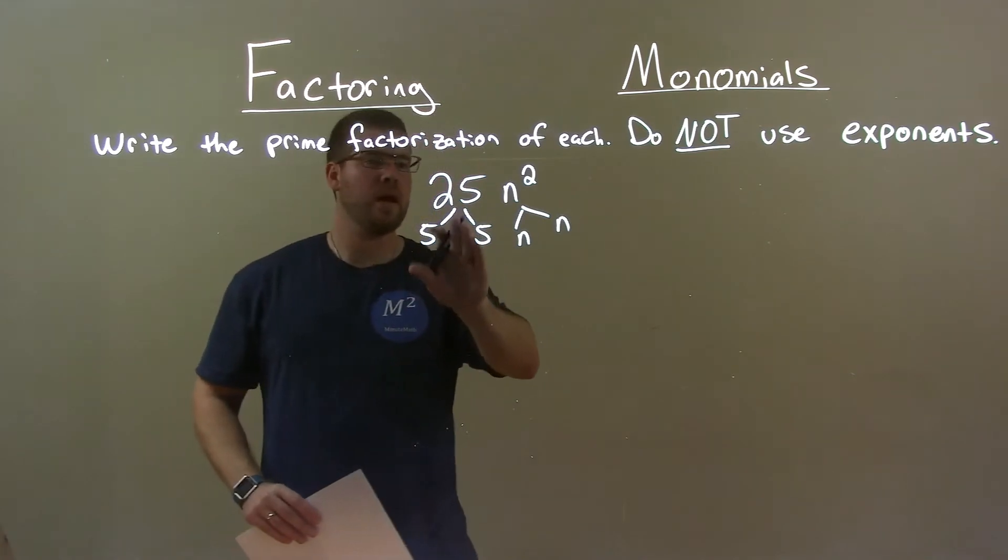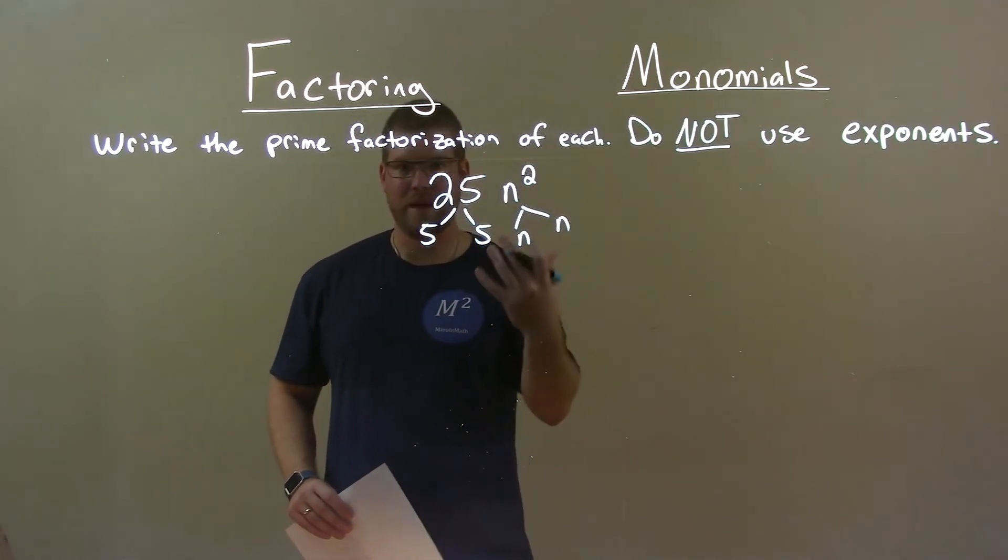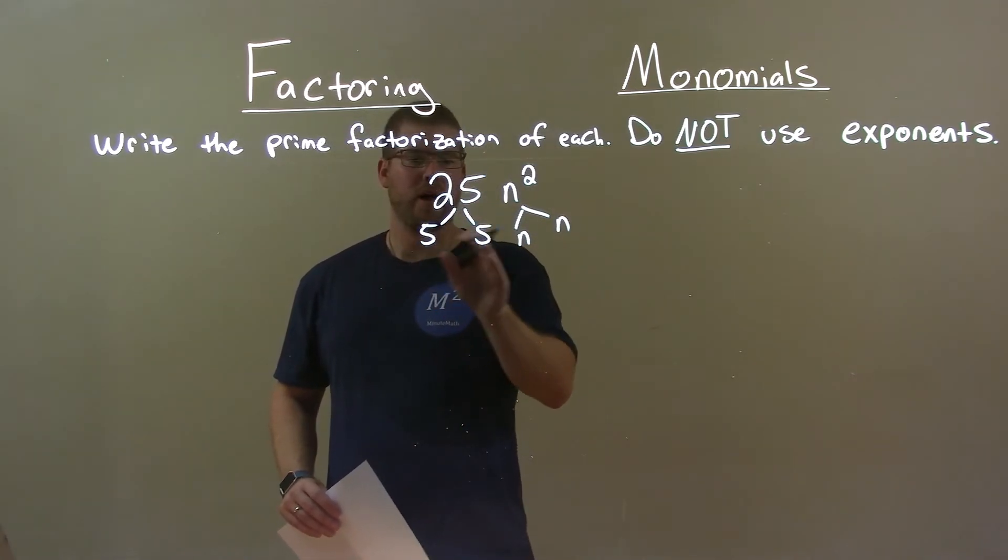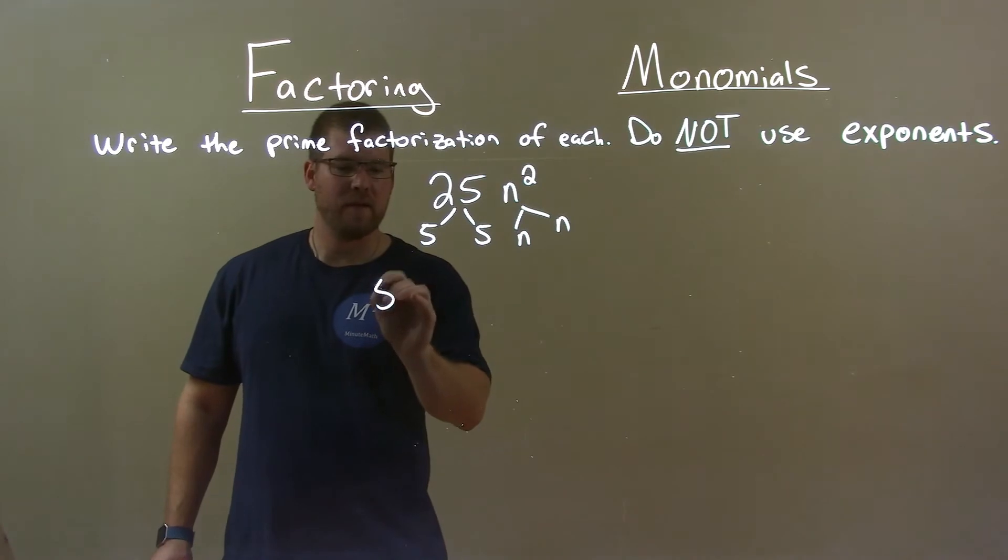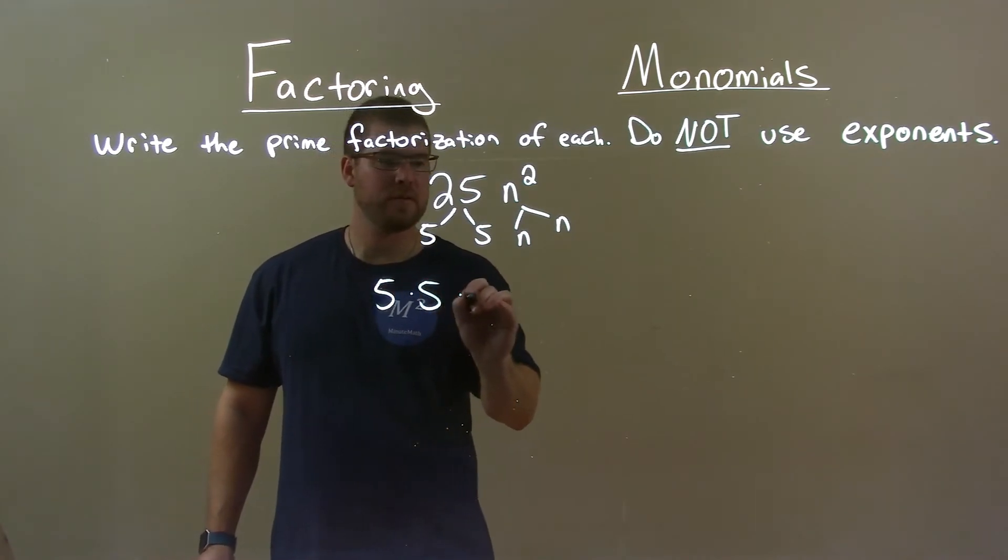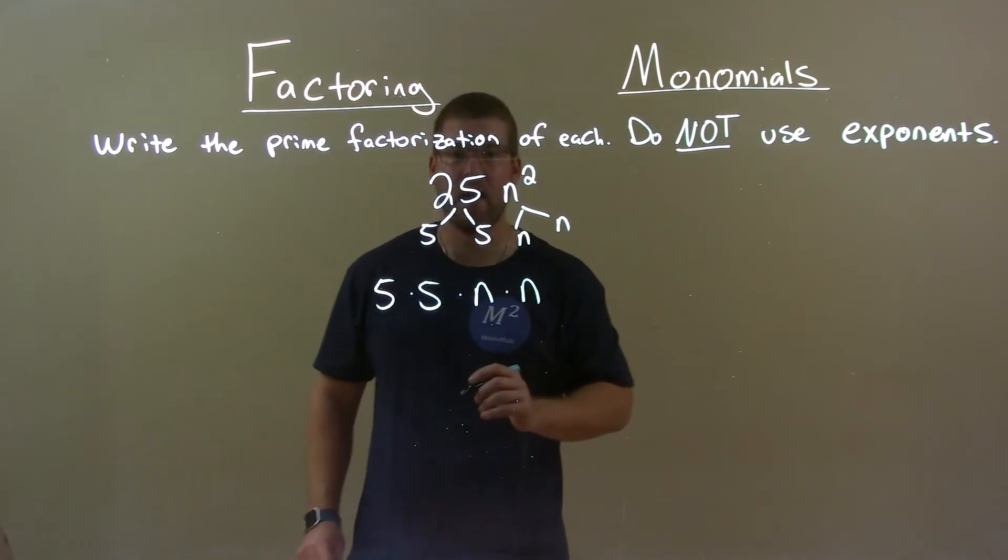So now we've actually broken down each one to their base form. 25, 5 times 5, both are prime numbers, so we're good. n squared is just 2 n's. So, this breaks down to be 5 times 5 times n times n.